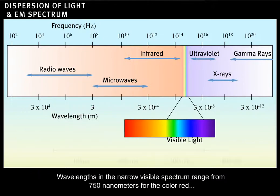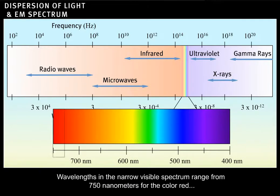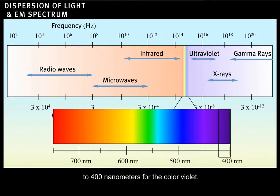Wavelengths in the narrow visible spectrum range from 750 nanometers for the color red to 400 nanometers for the color violet.